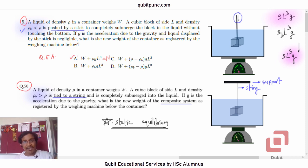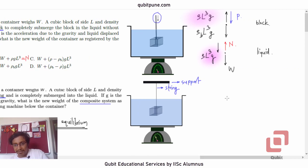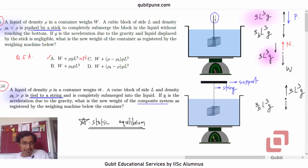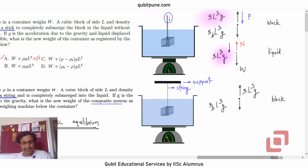Now let us go to question 50. We have already read it. So we will follow similar procedure here. Let's consider the block first. Weight of the block acting downwards: ρ_B L³ g. Buoyant force acting vertically upwards: ρ L³ g. This time, buoyant force is not enough because density of the block material is greater than the density of the liquid. So in this particular case, it needs to be supplied an additional force in the form of tension to keep it in equilibrium.